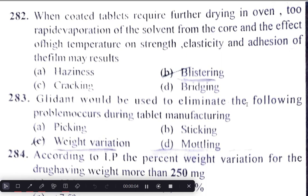When coated tablets require further drying in an oven, too rapid evaporation of the solvent from the core and the effect of high temperature on strength, elasticity, and adhesion of the film may result in blistering.